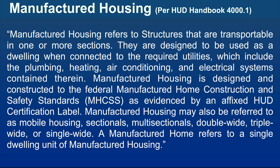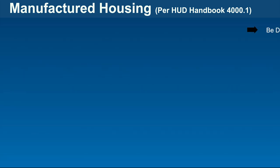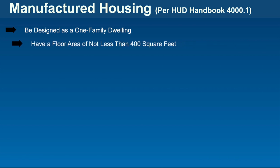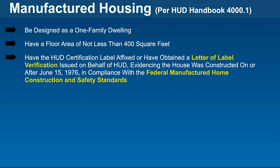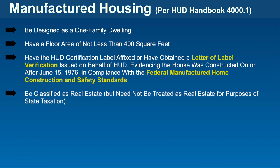A manufactured home refers to a single dwelling unit of manufactured housing. FHA HUD handbook 4000.1 additionally requires that a manufactured home be designed as a one-family dwelling, have a floor area of not less than 400 square feet, have the HUD certification label affixed — or have obtained a letter of label verification issued on behalf of HUD evidencing the house was constructed on or after June 15, 1976, in compliance with the federal manufactured home construction and safety standards. It must also be classified as real estate and be built and remain on a permanent chassis.